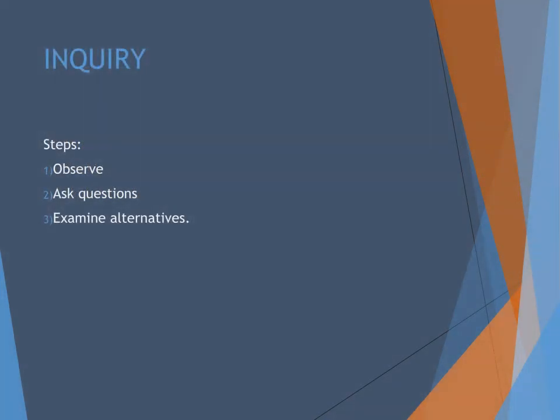What are the steps for inquiry? First, observe. Then, ask questions. And then, examine alternatives. Go to YouTube and look at any political advertisement and follow these three steps for inquiry. How can performing an inquiry help you mount an academic argument about the political ad?